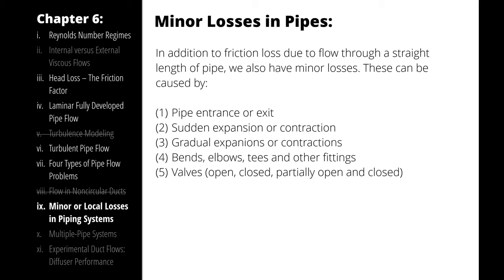When we quantify frictional head losses in internal flow, we sort them into two categories. First, major losses — sometimes just referred to as friction losses — which represent the losses associated with friction along straight lengths of pipe.